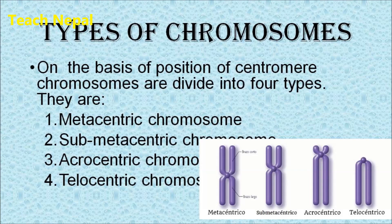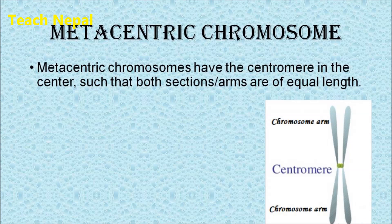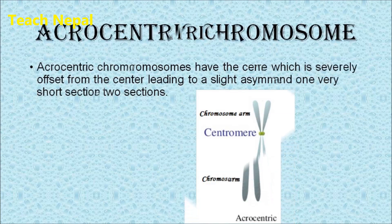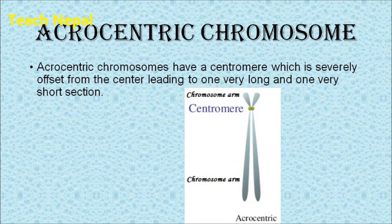In a sub-metacentric chromosome, the centromere is slightly offset from the center, making one arm longer than the other. In an acrocentric chromosome, the centromere is positioned near one end, meaning one arm is very long and the other is very short.